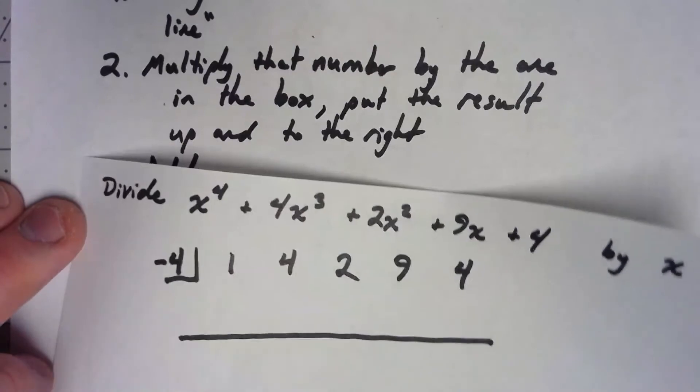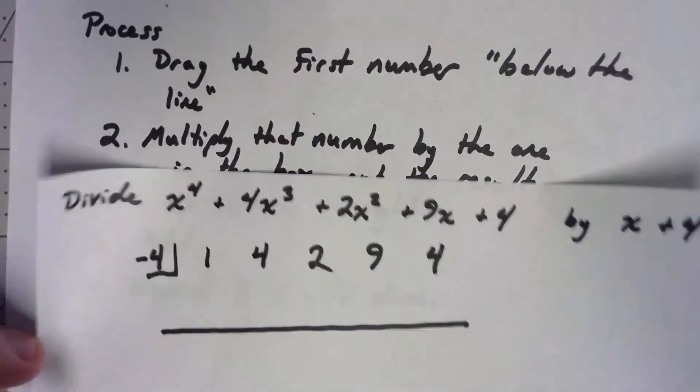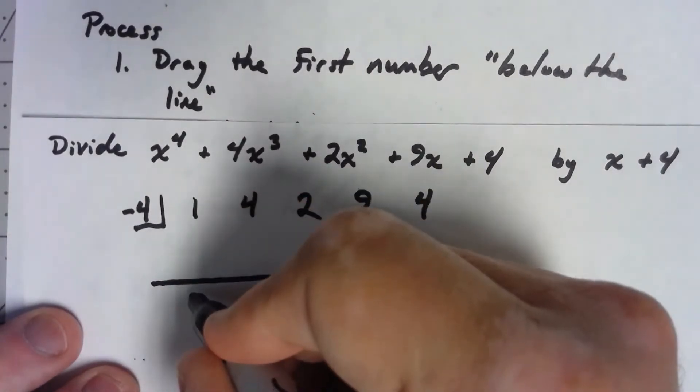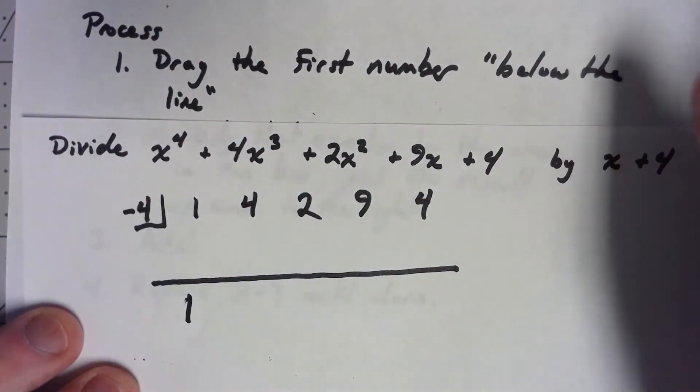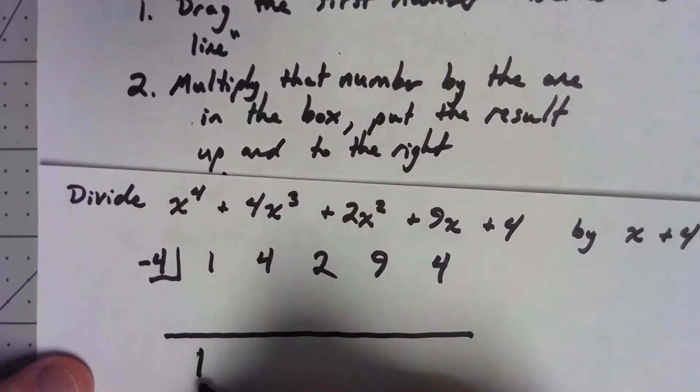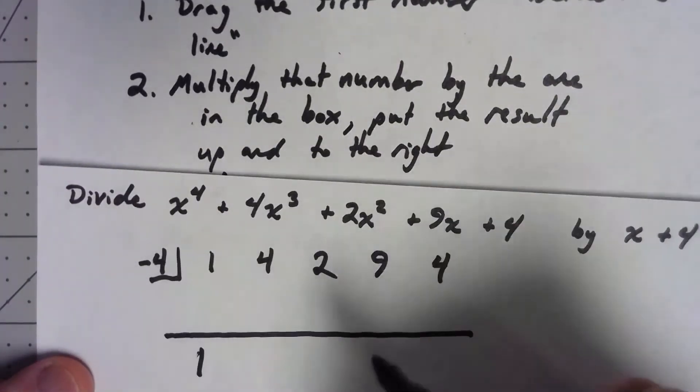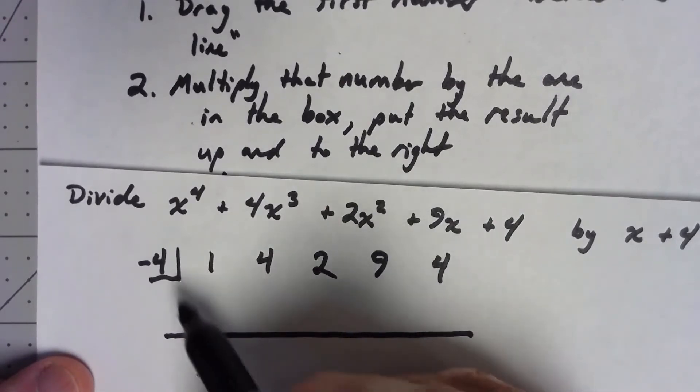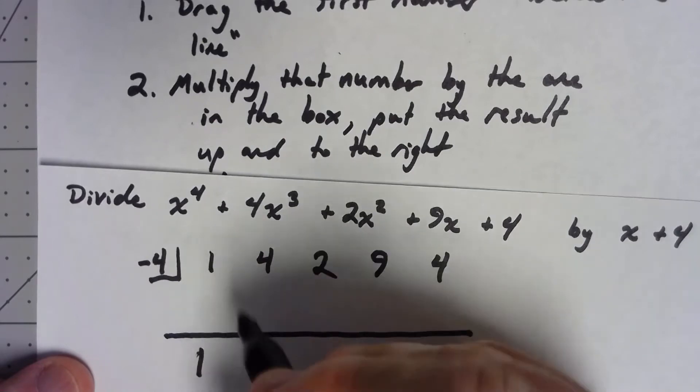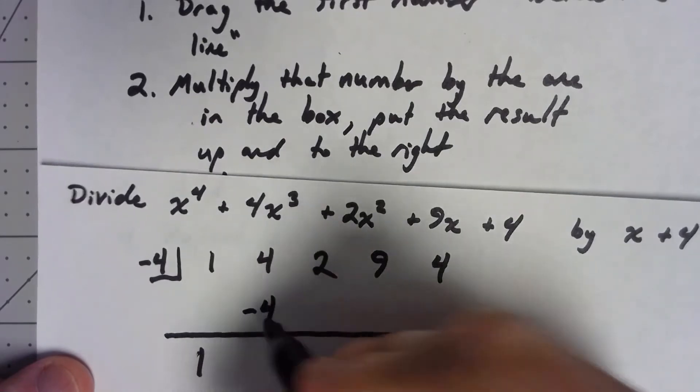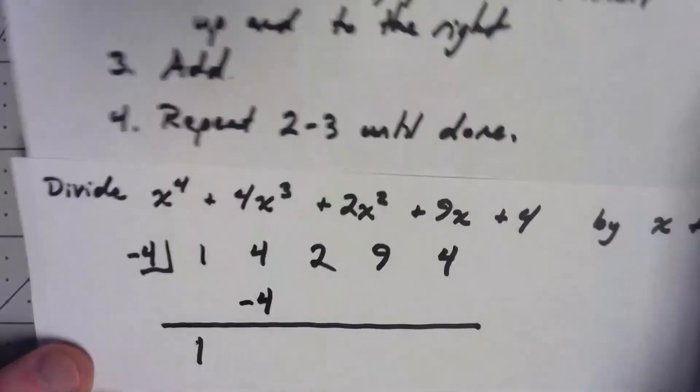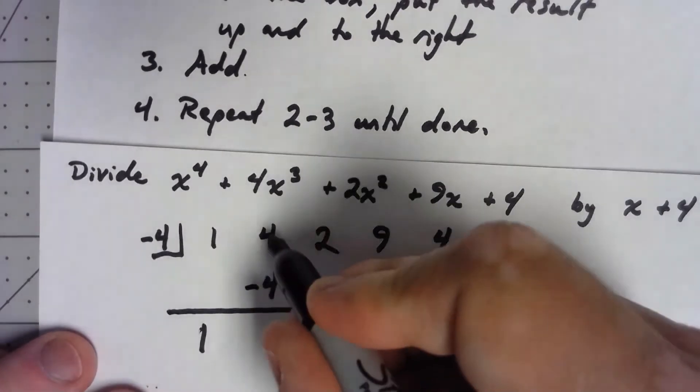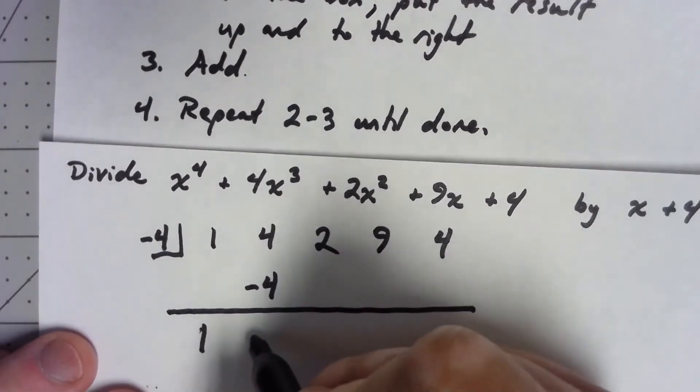Now we get into the actual process of doing this. The first thing, the first number just gets dragged straight down. One comes down here, done. Then multiply whatever number I just wrote by the number in the box, and I put it up and to the right in the next column. So I take a negative 4 times 1 is a negative 4. I'm going to write it right there.